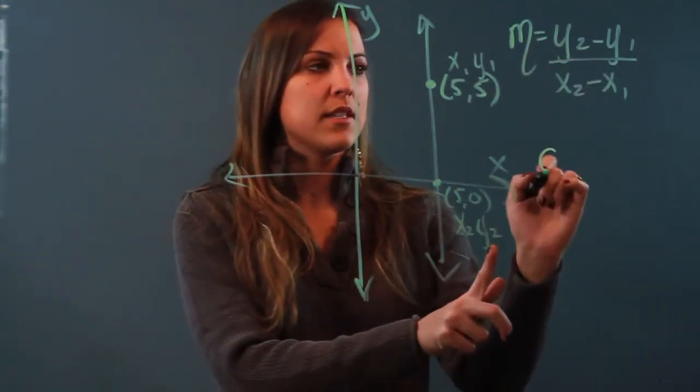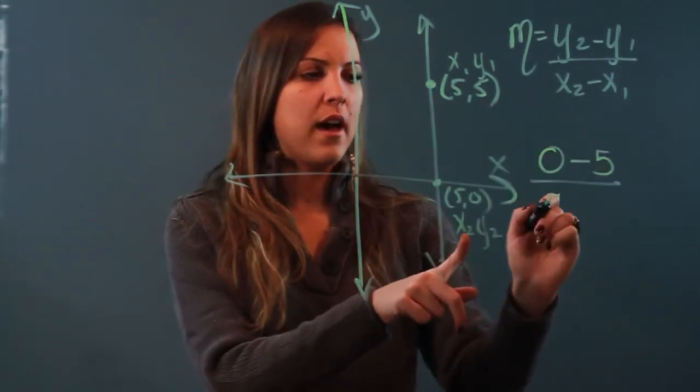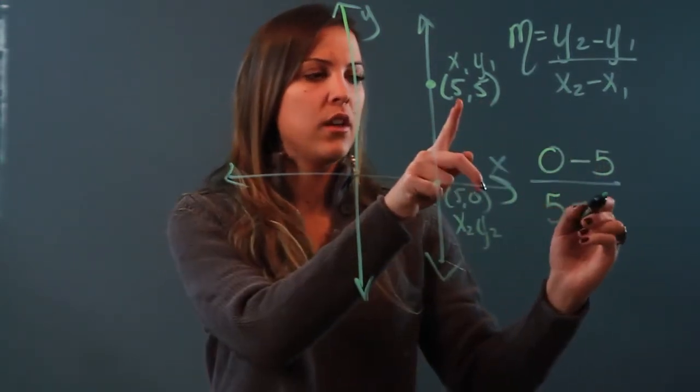So my y2, 0 minus my y1, 5, over x2, 5 minus x1, 5.